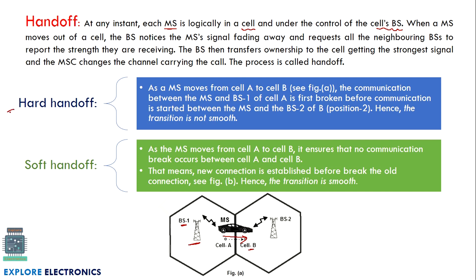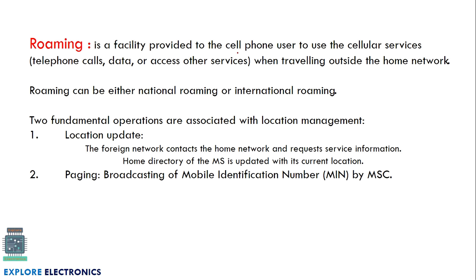There are two types of handoffs: hard handoff and soft handoff. If a mobile station moves from one base station to another and the transition of channels between base station one and base station two is smooth, we call it a soft handoff. If the connection breaks during the transition, we call it a hard handoff. Here you can see base station one and base station two, and a car moving between them. If there is any break in communication during this travel, it is a hard handoff; if there is a smooth transition with no break, it is a soft handoff.